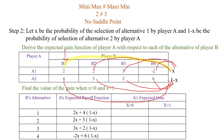Next, we fill the third column: A's expected gain. We substitute x = 0 and x = 1 into each of these equations. When x = 0, we get one set of values; when x = 1, we get another set of values.